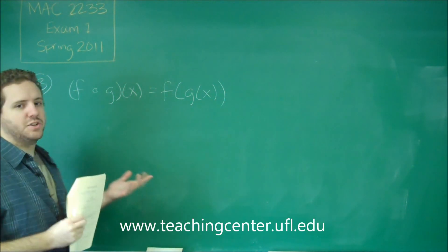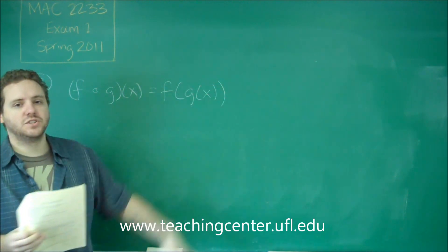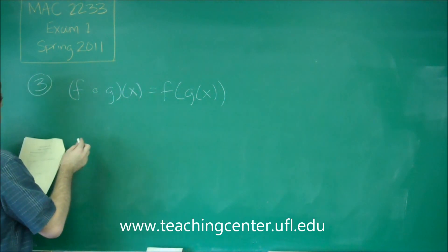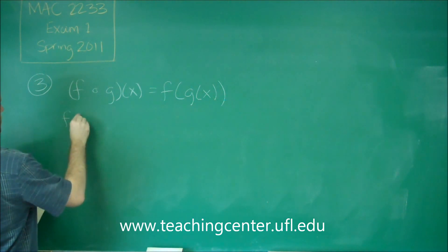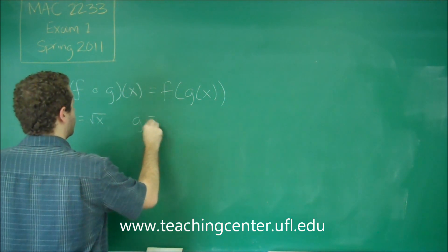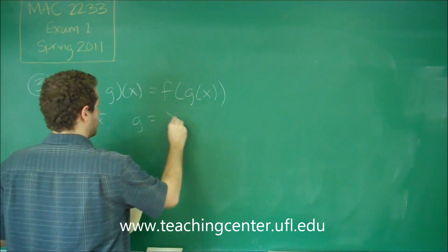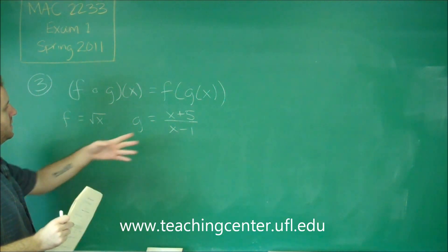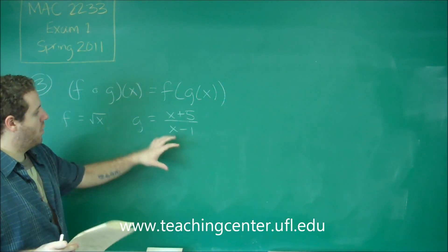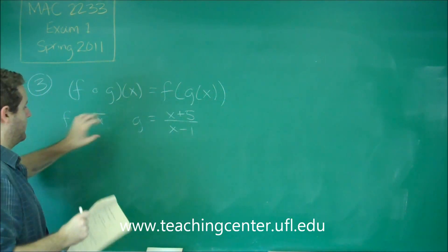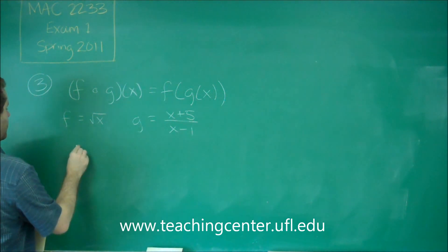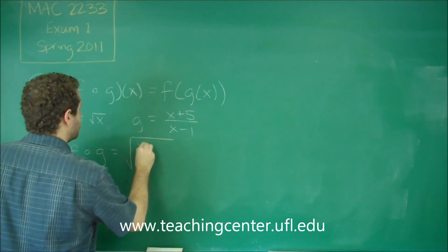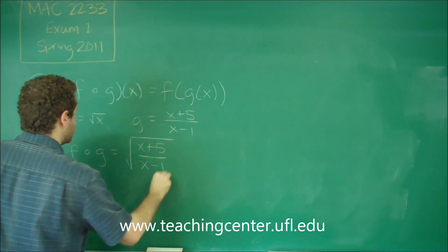I find this a little bit easier to look at because this is more clear that you take the function g of x and you plug it into f. So with our f being square root of x and g being x plus five over x minus one, what we're going to be doing here is we're going to be taking this whole x plus five over x minus one and plugging it in instead of the x for f. So then we get our f of g to be square root of the whole fraction x plus five over x minus one.